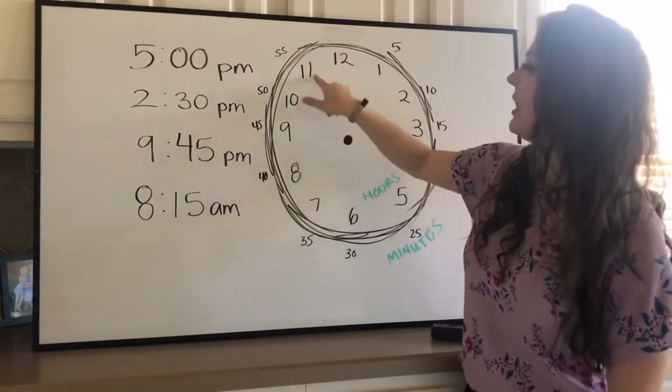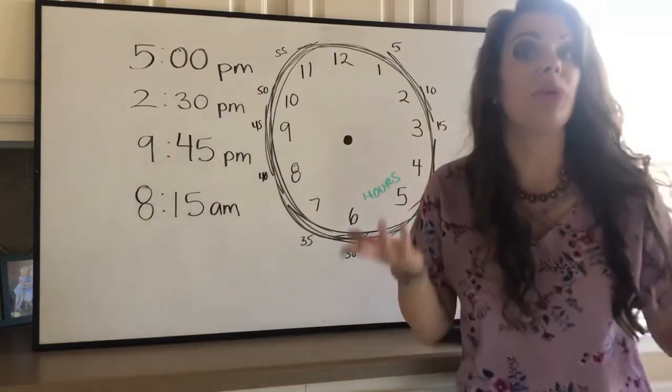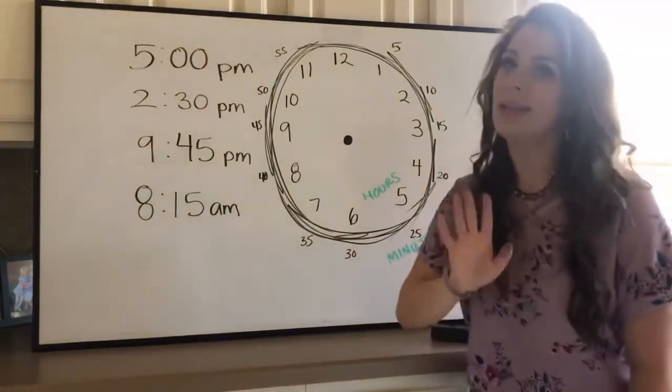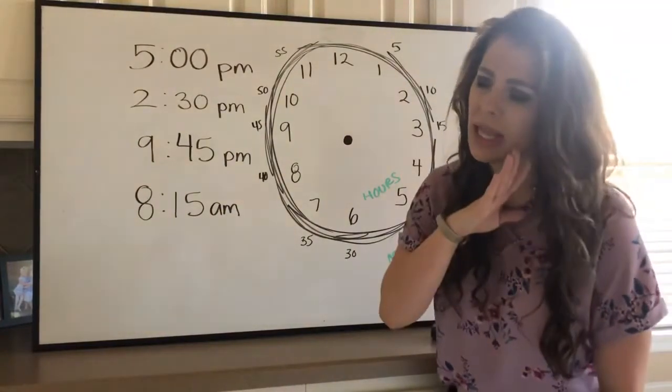Six, seven, eight, nine, 10, 11 and back to either noon or midnight. That's how a day works, right? There's no 13 unless you're military time, but we're not getting into that.